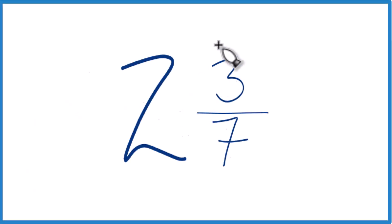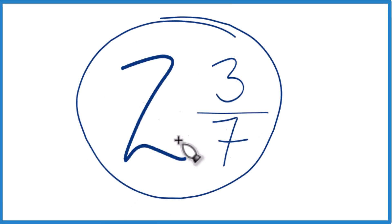If you're asked to write the mixed number 2 and 3 sevenths as an improper fraction, here's how you do it.